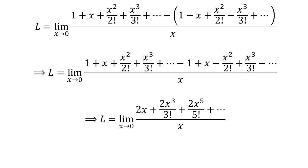Adding like terms in the numerator gives us L equals the limit of 2 times x plus 2 times x cubed upon factorial of 3 plus 2 times x to the power of 5 upon factorial of 5, all upon x, as x approaches 0.